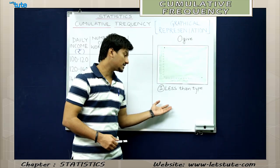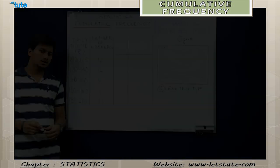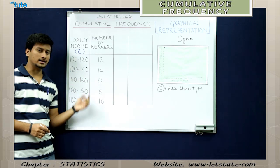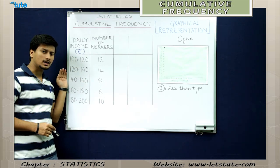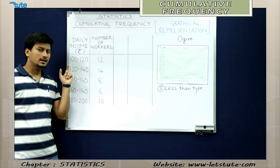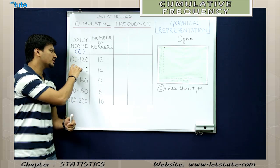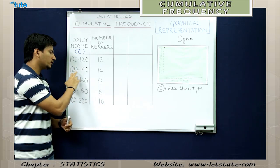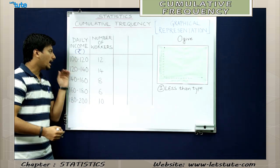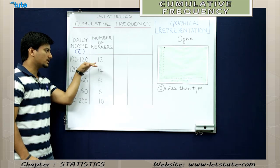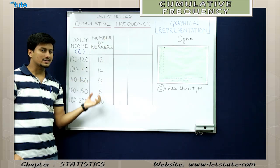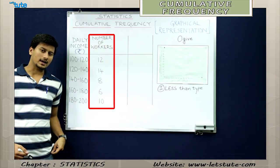Before I tell you why the name 'less than type', let's start with an example. I have an example of daily income of some workers in terms of Indian rupees. This particular data is grouped data because it is divided into small groups. Every group has a class size of 20, so there is a difference of 20 rupees: 100 to 120, 120 to 140, 140 to 160, 160 to 180, and 180 to 200. This income group also shows the number of workers that fall in the corresponding category. The column 'number of workers' is nothing but the frequency column, denoted as F.